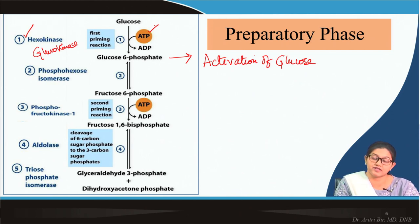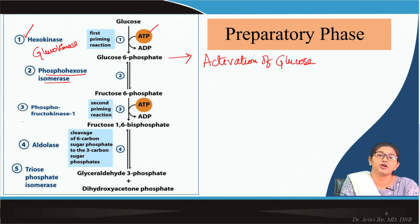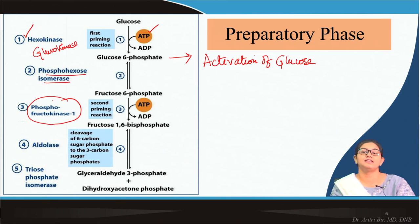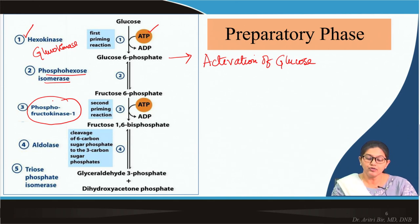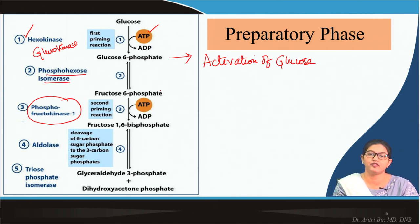Either hexokinase or glucokinase converts glucose to glucose-6-phosphate. This is the first priming reaction, and the phosphate donor is ATP. Next, glucose-6-phosphate is converted to fructose-6-phosphate in an isomerization reaction catalyzed by phosphohexose isomerase. Then fructose-6-phosphate undergoes another priming reaction by phosphorylation with the help of the enzyme phosphofructokinase-1. The two phosphorylation reactions — glucose to glucose-6-phosphate and fructose-6-phosphate to fructose-1,6-bisphosphate — are irreversible, whereas the isomerization is reversible.